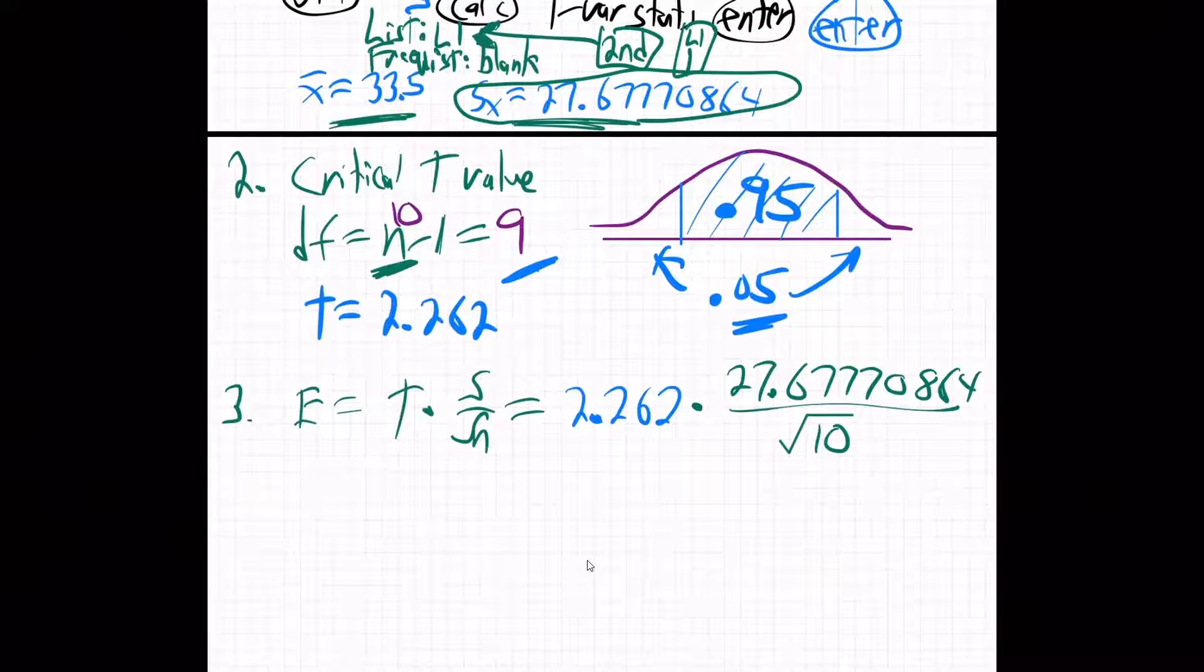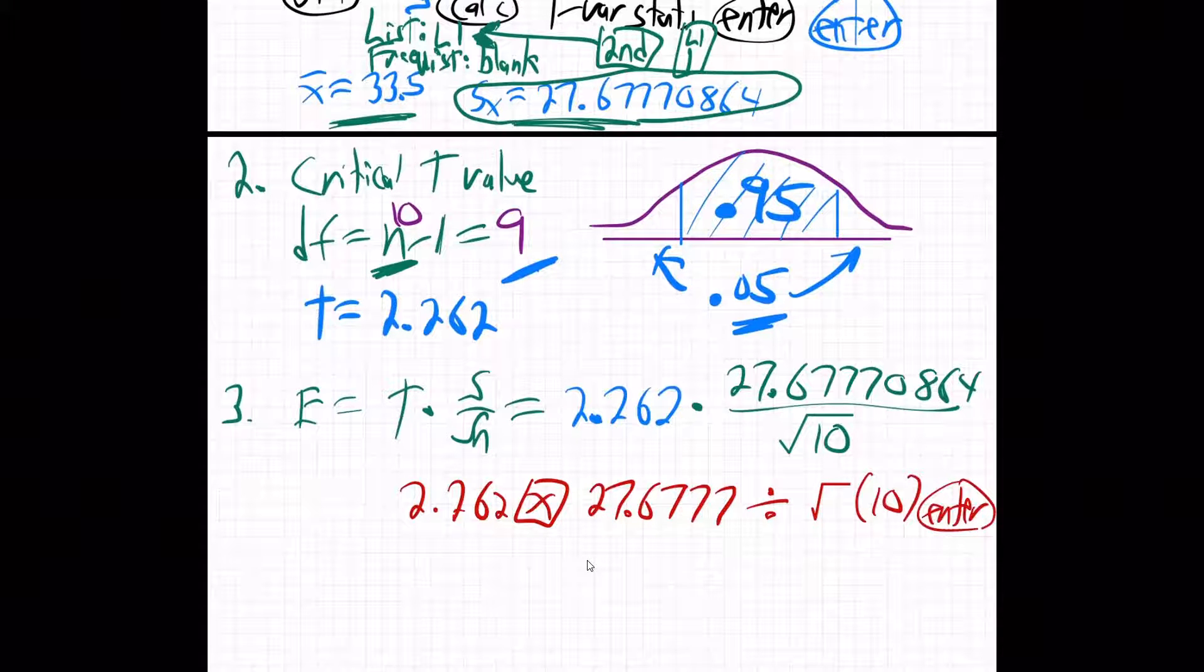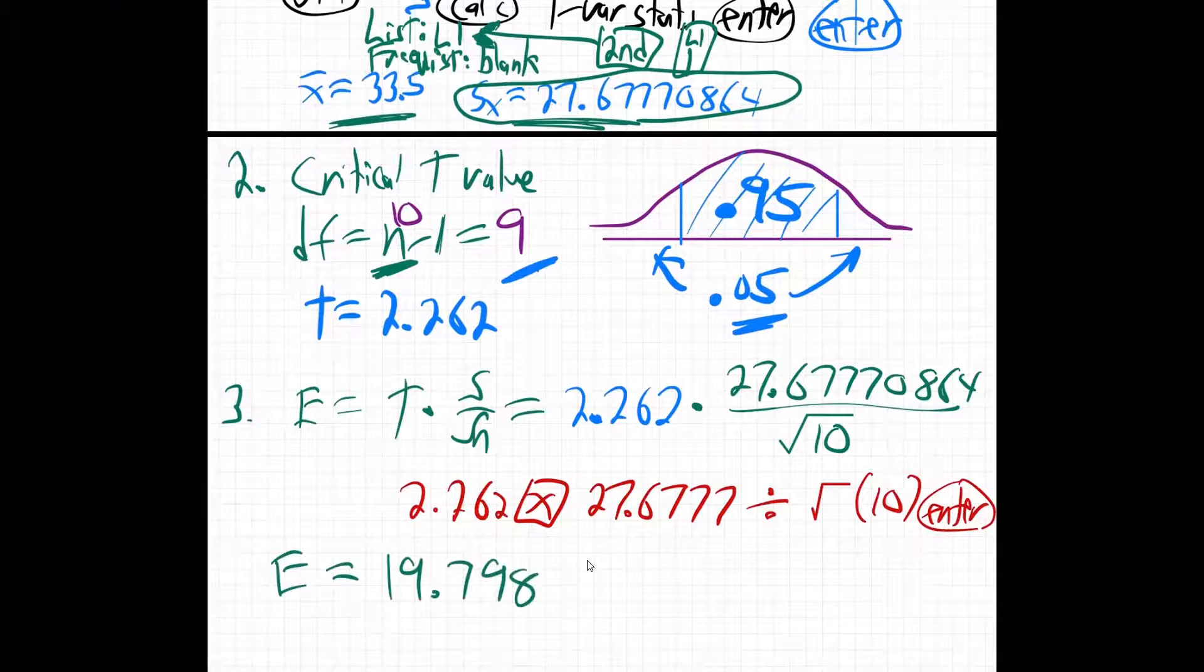So there we go. Hit the buttons on your calculator. Literally, what you're going to hit is 2.262 times the 27.6777. That's good enough. Divided by the square root of 10. And I'm getting an answer. There equals 19.798. I'll go 0.6. That's enough. Plenty. That's more than we need.